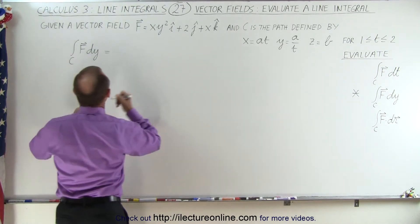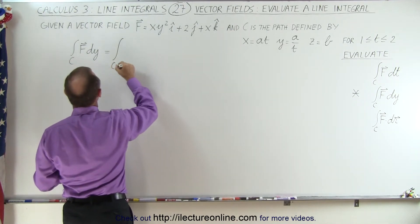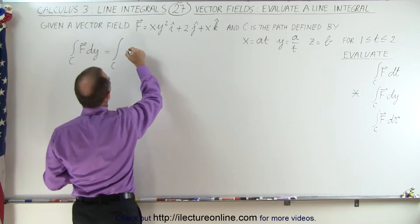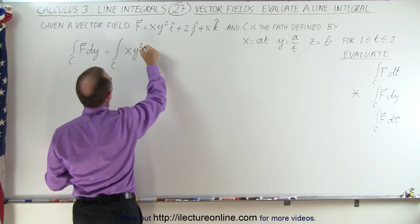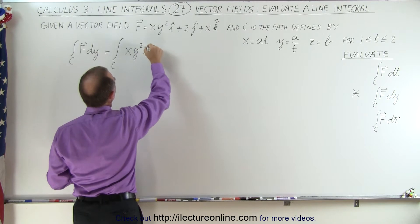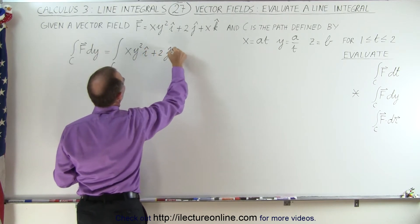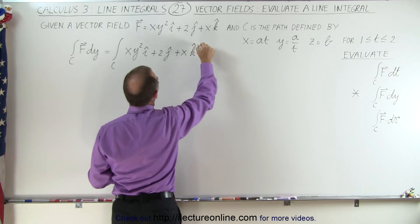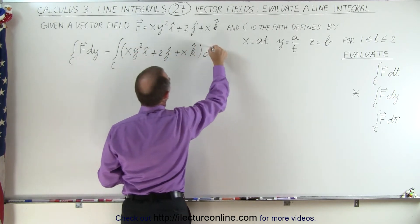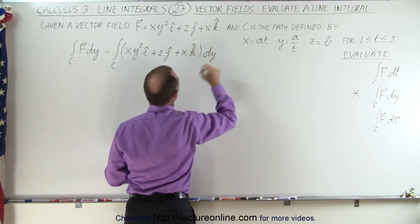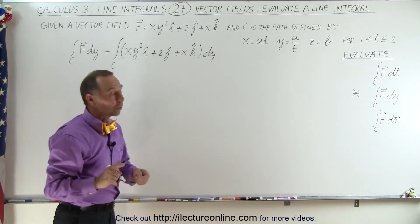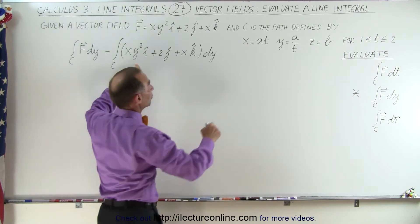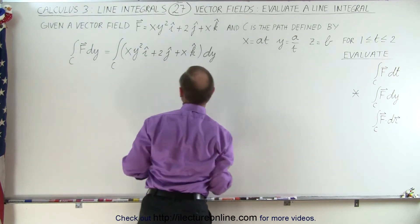This now becomes equal to the integral. Instead of f, we're now going to write this here, so this becomes xy squared in the i direction, plus 2 in the j direction, plus x in the k direction, and that's times dy. Now we're going to write x and y in terms of the parametric equations, in terms of variable t.